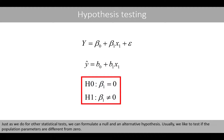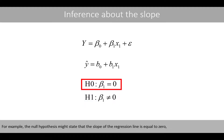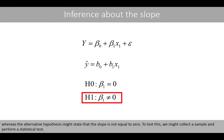Just as we do for other statistical tests, we can formulate a null and an alternative hypothesis. Usually, we like to test if the population parameters are different from zero. For example, the null hypothesis might state that the slope of the regression line is equal to zero, whereas the alternative hypothesis might state that the slope is not equal to zero.